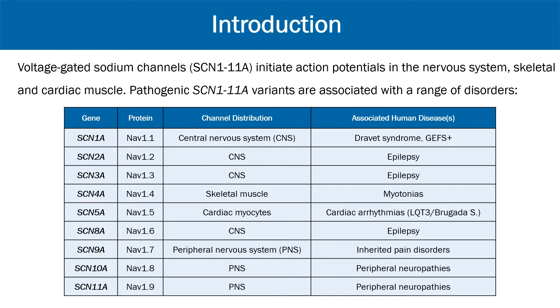The voltage-gated sodium channel family comprises nine members of functionally expressed channels that are distributed throughout the nervous system, skeletal and cardiac muscle. Depending on their location in different tissue types, variants can be associated with a broad range of diseases.